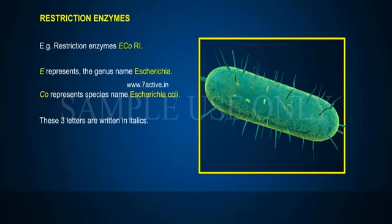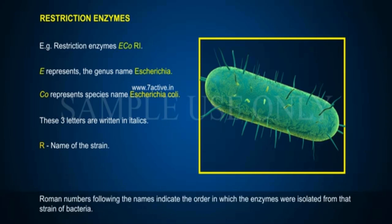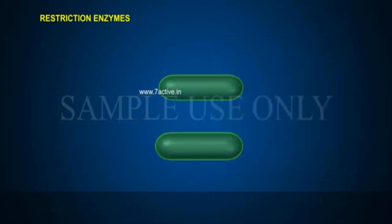In the naming convention, the first three letters are written in italics, followed by the name of the strain. Roman numerals following the names indicate the order in which the enzymes were isolated from that strain of bacteria.